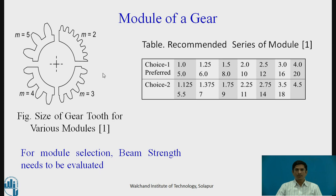Looking at the sizes of module: Choice 1 includes 1, 1.25, 1.5, 2 — these are the preferred choices. Choice 2 contains intermediate values between those preferred choices, such as values between 1.25 and 1.5.